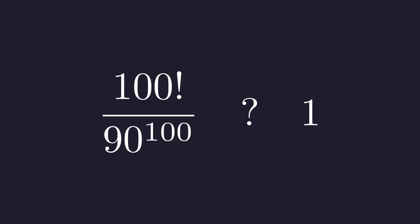We need to determine if the ratio of 100 factorial to 90 to the 100th is greater than 1, less than 1, or equal to 1.